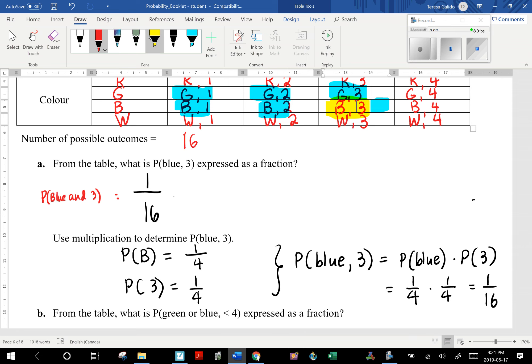How can we use these numbers to get the probability that we already know as 1 out of 16? It looks like 1/4 and 1/4 here are being multiplied to get 1 out of 16. So the probability of getting a blue and a 3 is just the multiplication of the probabilities of getting a blue and getting a 3. That's 1/4 times 1/4 equals 1/16.